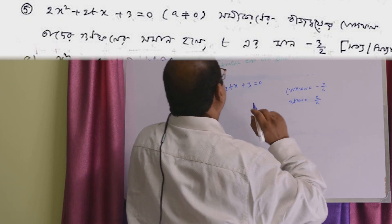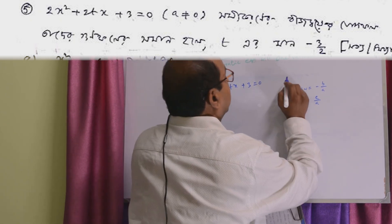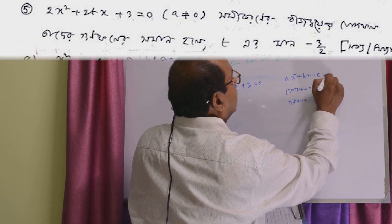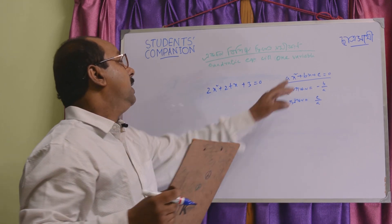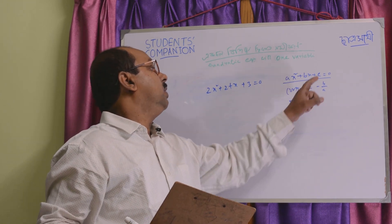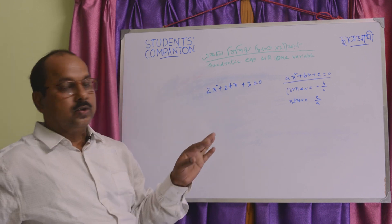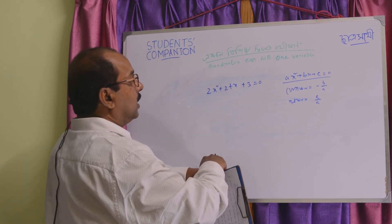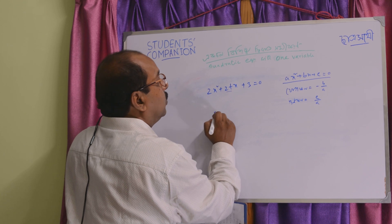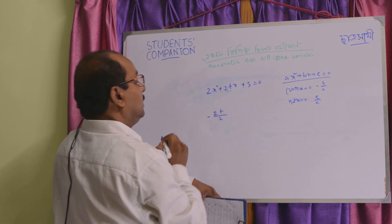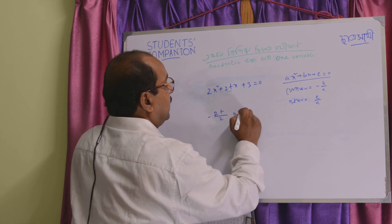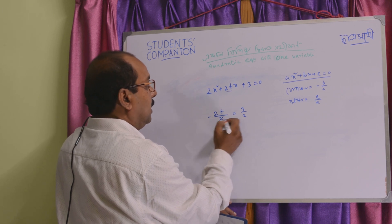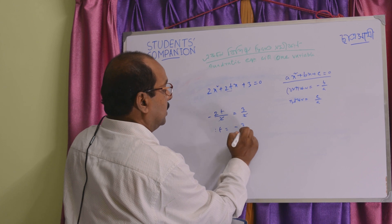In the general form ax² + bx + c = 0, the sum of roots equals minus b by a, and the product of roots equals c by a. Here b equals 2t, so using minus 2t by 2 equals c by a, we get t equal to 3 by 2.